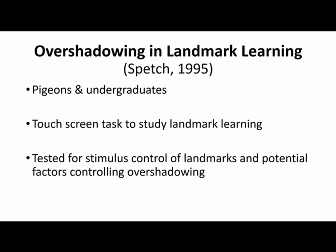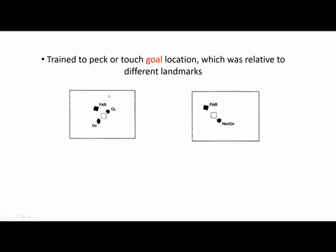They ran the same experiment in both pigeons and undergraduates using a touchscreen task to study landmark learning. The experiment was set up to test for stimulus control of landmarks and look for factors that might control overshadowing. Participants were shown landmarks on a touchscreen, and based on those landmarks they would be reinforced if they pecked or touched a white square in the middle — the goal location. During training, the square was shown, but afterwards it was removed and participants had to remember the position relative to the other landmarks.